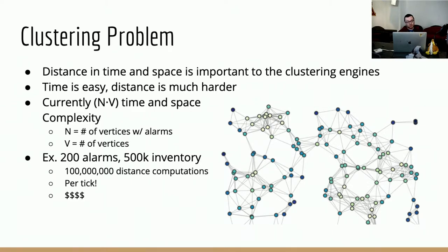So we need to compute the shortest path between the nodes with faults to come up with a fair distance value to use when comparing. It turns out that distance computation, at least in the case of the DBSCAN engine, is where a significant portion of the clustering time is spent. The current method we use is to run Dijkstra's algorithm against all the nodes with faults, which ends up computing the distance from those nodes to every other node on the graph, even nodes that don't have faults that we don't care about.